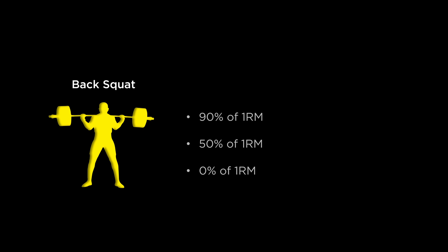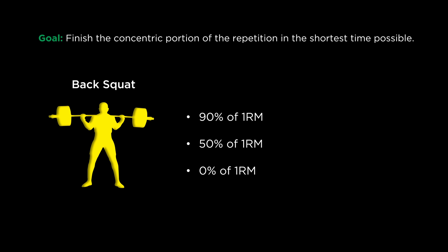Take the back squat as an example. With three different intensities — 90% of one repetition maximum, 50%, and zero — if we instruct the athlete to perform those with one goal, finish the concentric portion of the repetition in the shortest time possible, it would mean that irrespective of the weight, the athlete would recruit as many motor units as he possibly can on that occasion. As you can see, there is a difference in meters per second depending on the intensity, quite simply because the weights vary, and the heavier something is, the more difficult it is to move it in a fast manner.